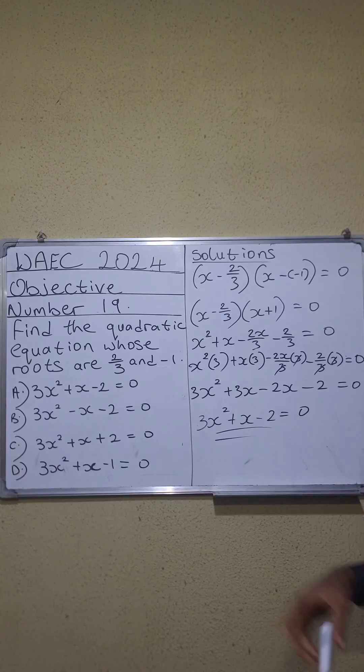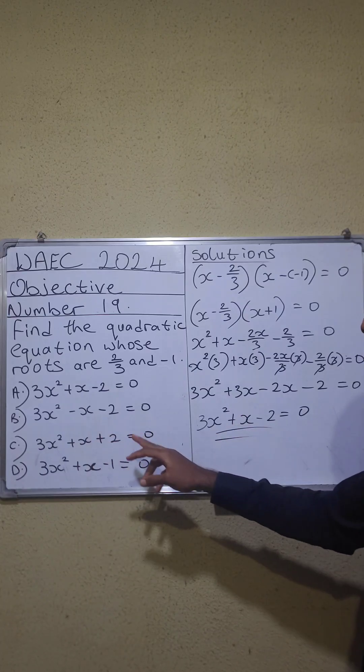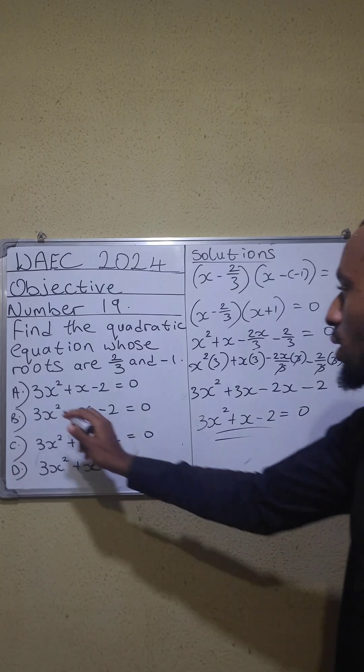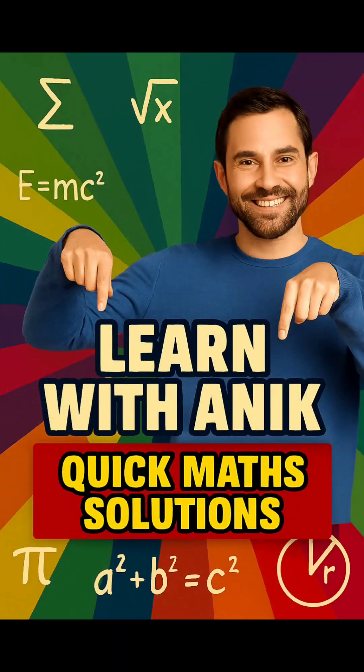Final answer: 3x squared plus x minus 2 equals to 0. I think that should be option A. And this is our final answer. If you learned from this video and want more videos like this, subscribe to this channel and turn on post notifications and also share to your friends.